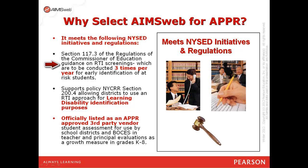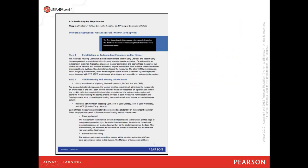Section 117.3 of the Commissioner of Education regulations provides guidance on RTI screenings, which are to be conducted three times per year for early identification of at-risk students. AIMSweb also supports policy NYCRR Section 200.4, which allows districts to use an RTI approach for learning disability identification. AIMSweb is officially listed as an APPR-approved third-party vendor student assessment for use in teacher and principal evaluations as a growth measure in grades K-8, and provides a brief step-by-step manual to map student scores to evaluation metrics.